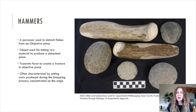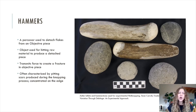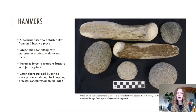Now that we've talked more in depth about the process of flintknapping, let's address the individual components in more detail. Hammers are the percussive objects used to detach flakes from objective pieces. Their purpose is to transmit force to create a fracture in the objective piece, and in archaeological contexts they're often characterized by pitting scars produced during the napping process. For hammerstones, these are often concentrated along an edge, and for antler billets, they're often concentrated at the rounded tip.